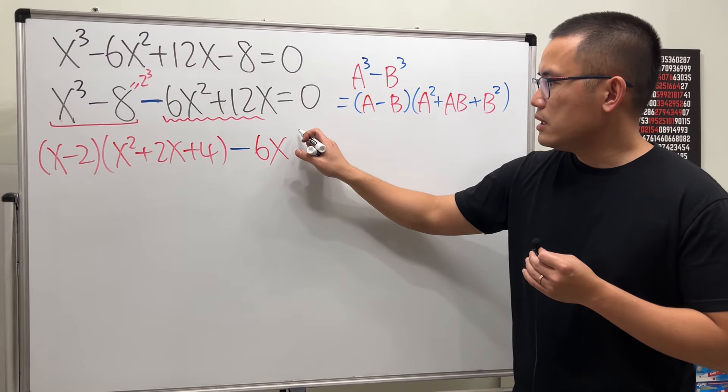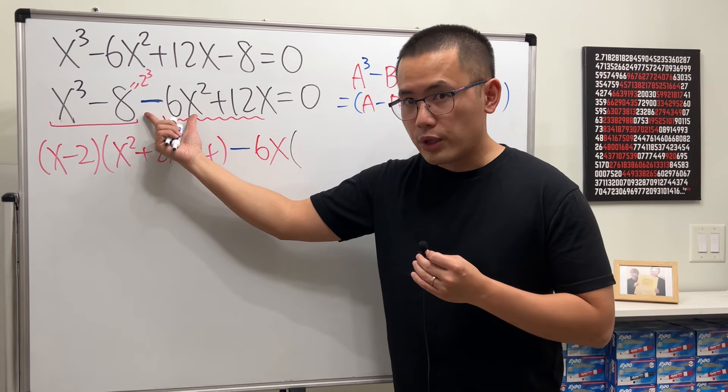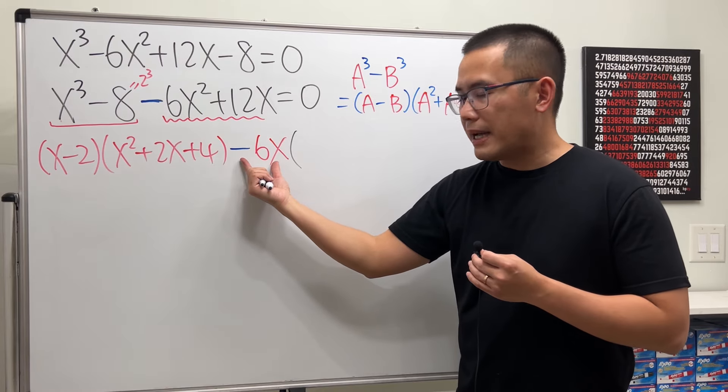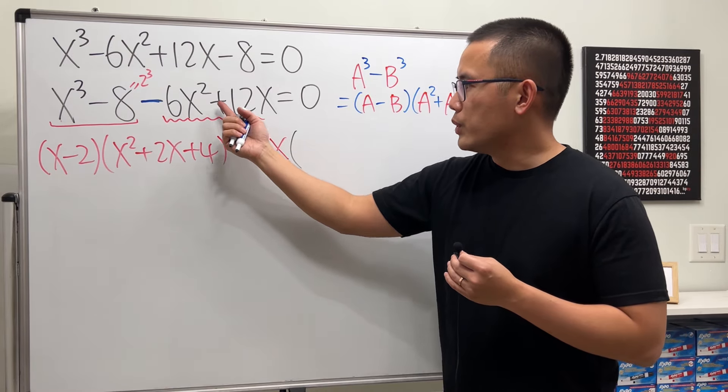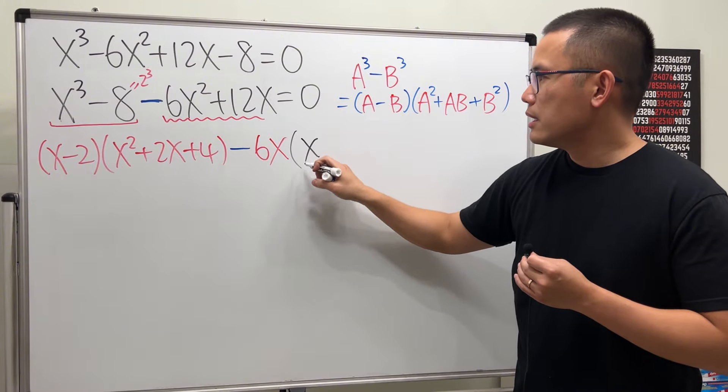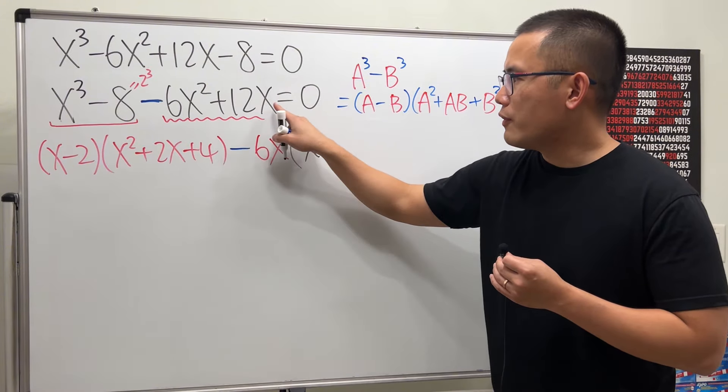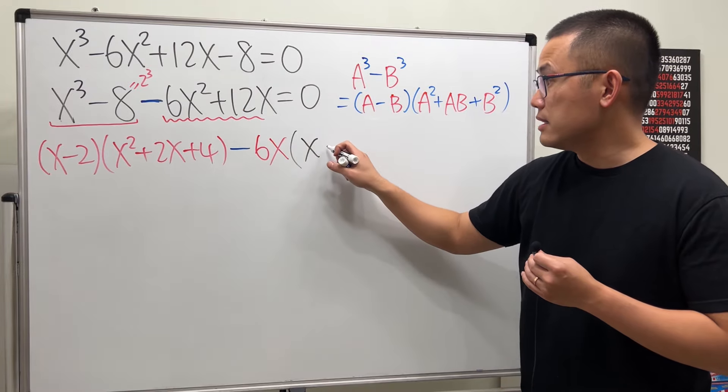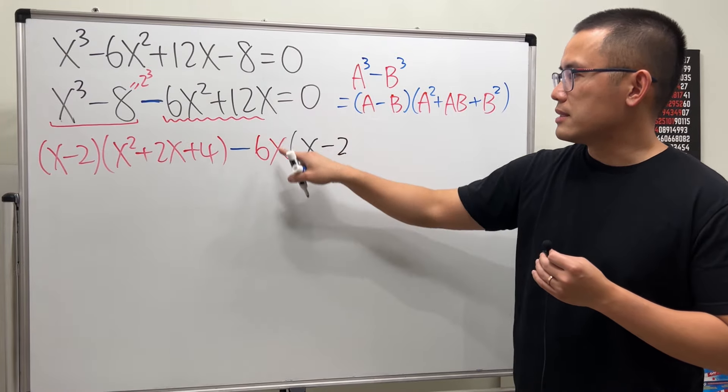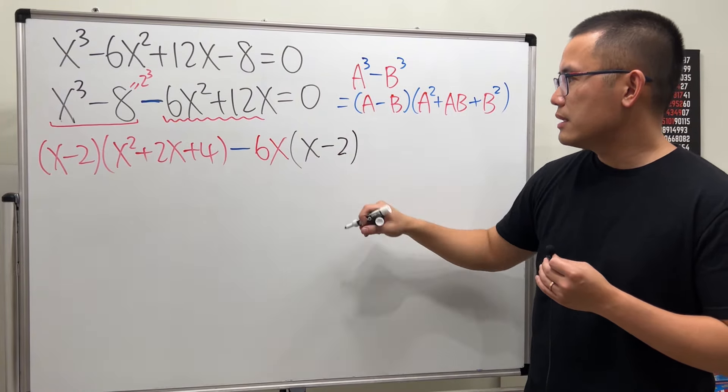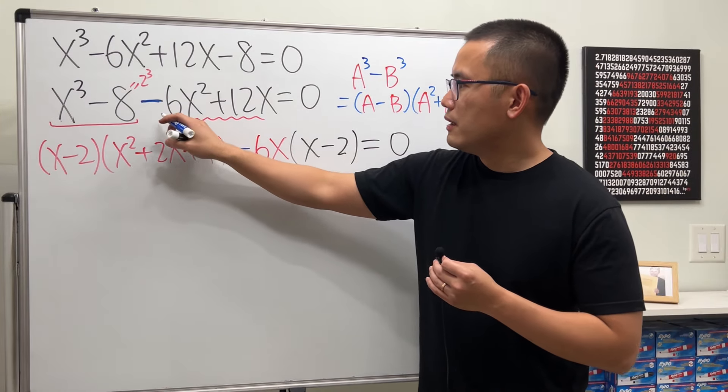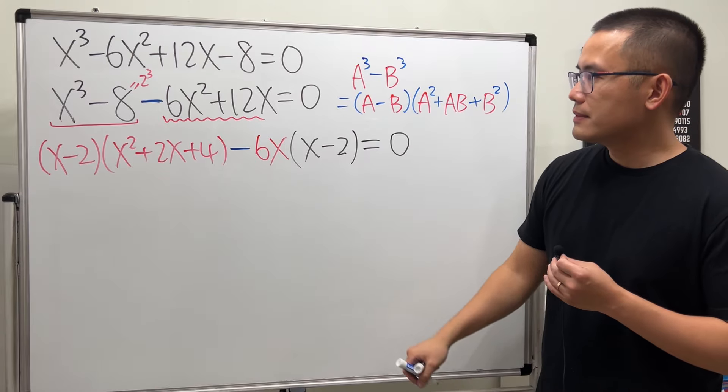Then, we see, take this originally, right? We have negative 6x squared divided by negative 6. We will get just an x. Originally, we have 12x divided by negative 6. 12 divided by negative 6 is negative 2. x is out right here already. So, this part is the factoring for the second part.